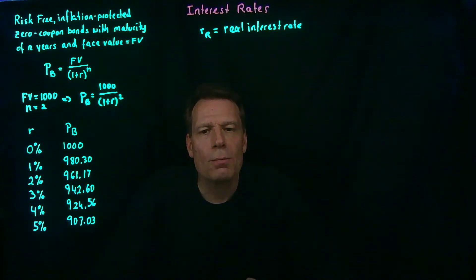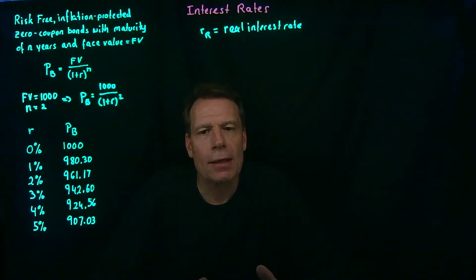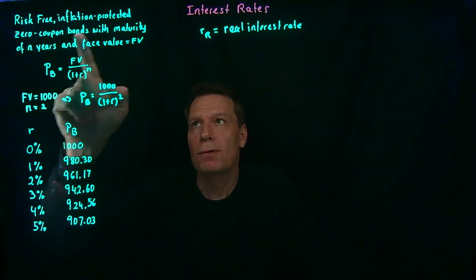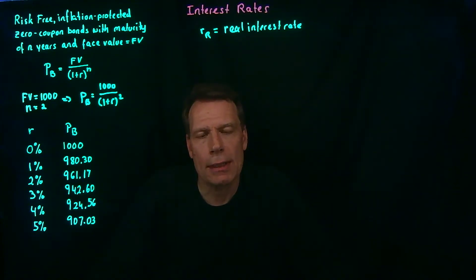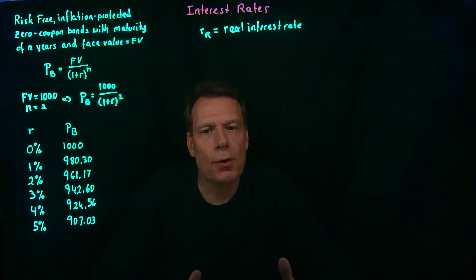It turns out that we don't typically see inflation-protected savings accounts in the real world, so we can't look at those interest rates to determine what the real interest rate in the economy is. But we do have risk-free inflation-protected bonds in the economy, and we can observe their prices. By observing those prices, we can infer what the real interest rate is.